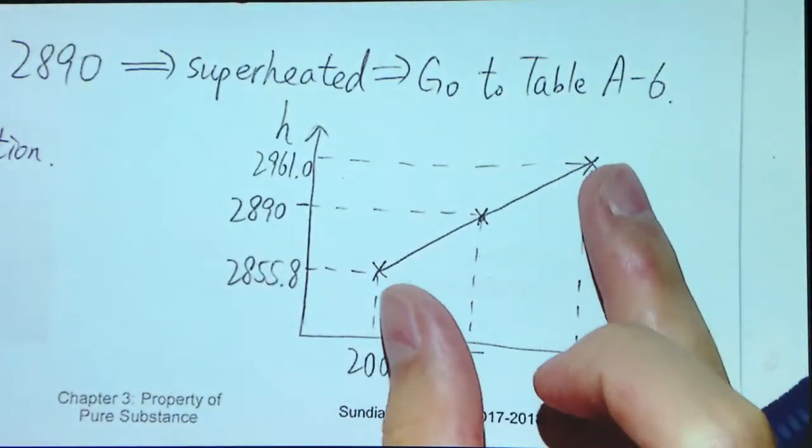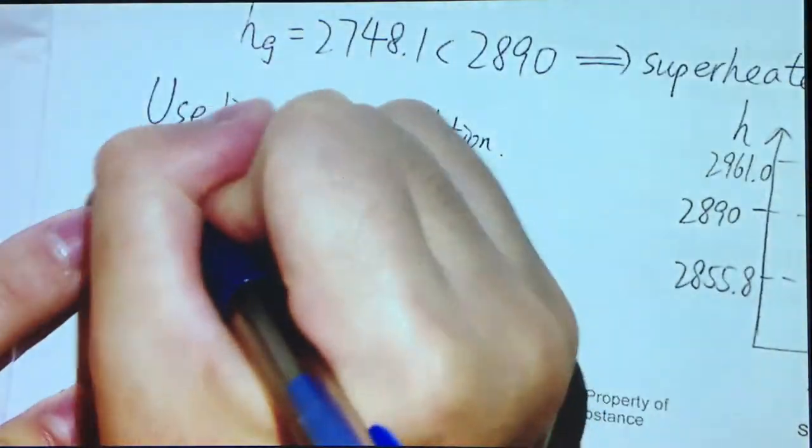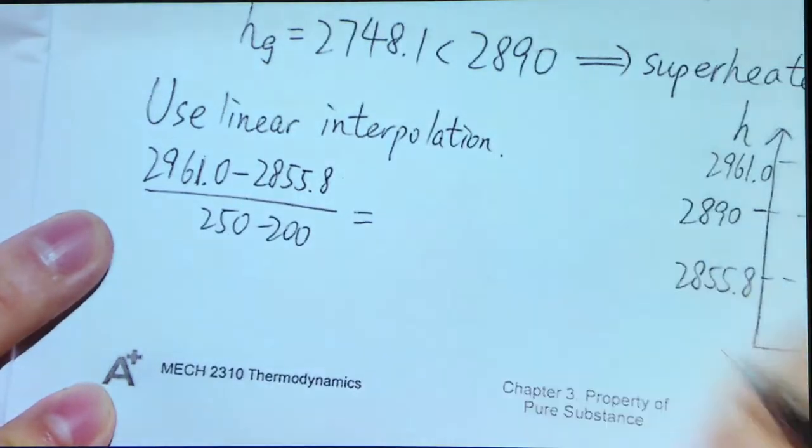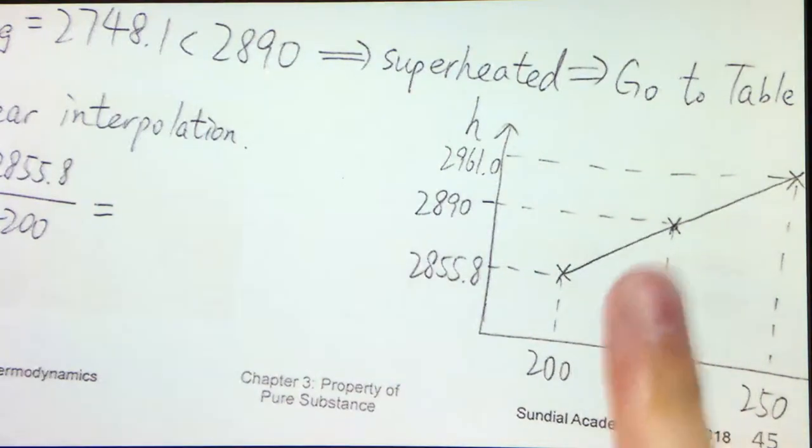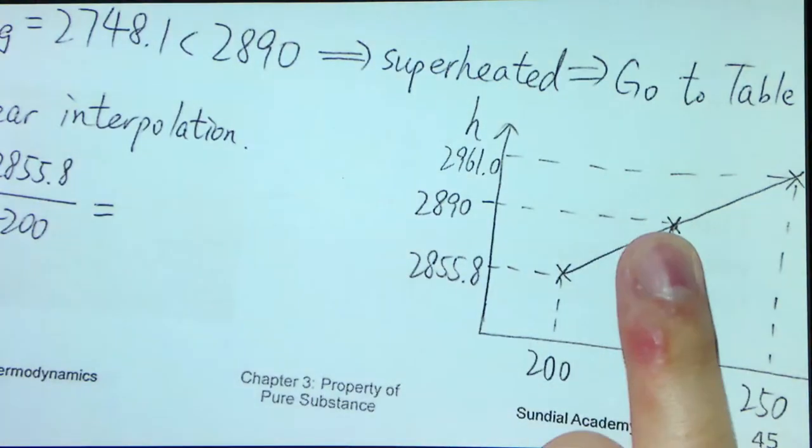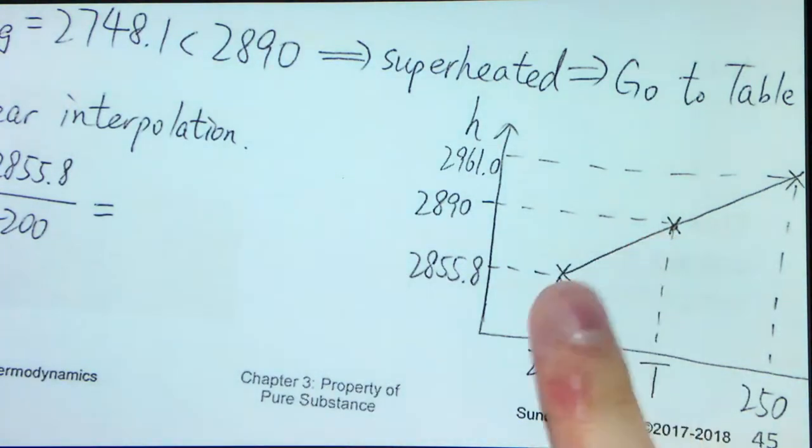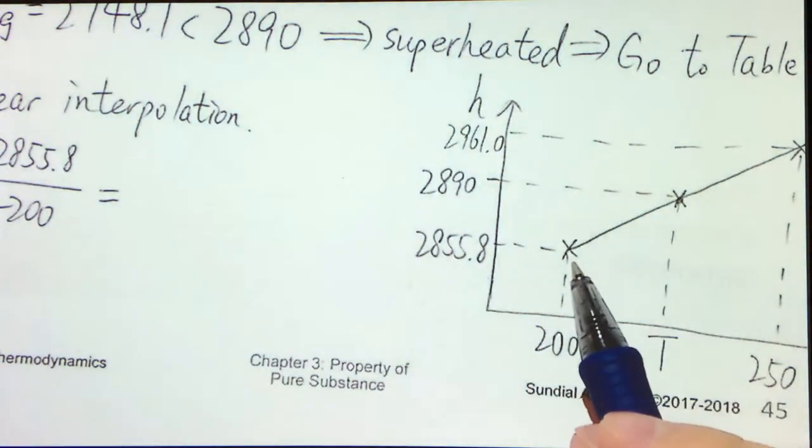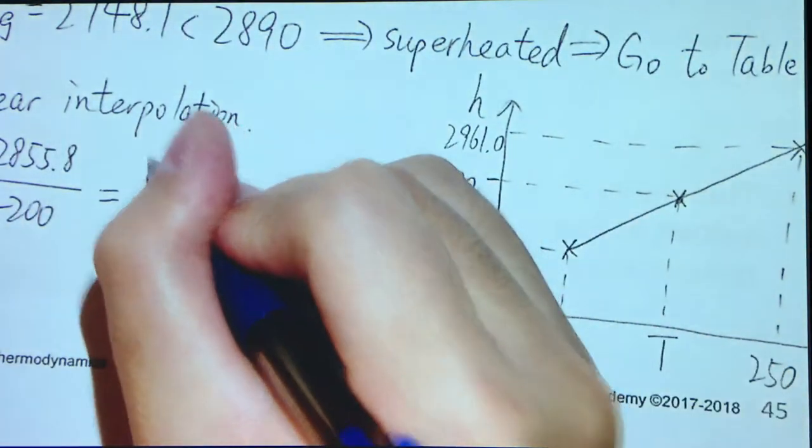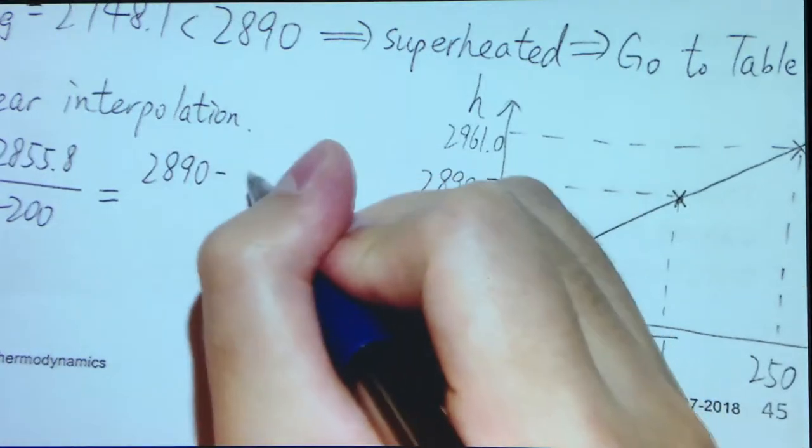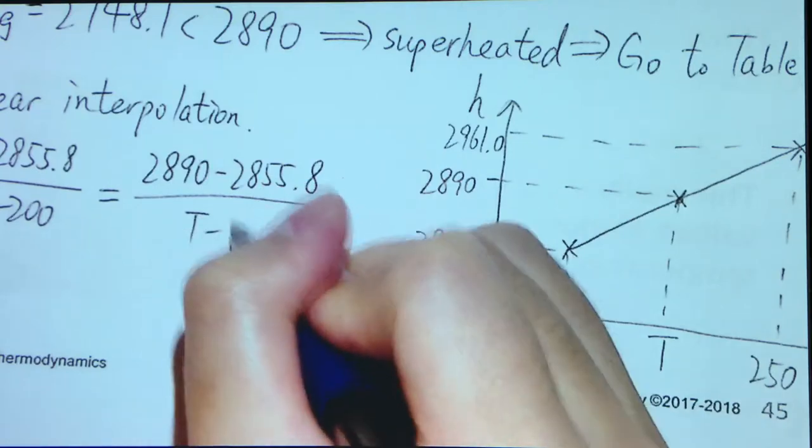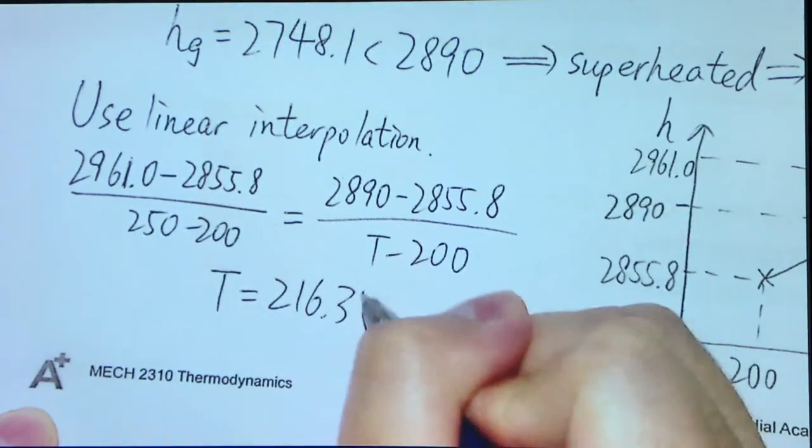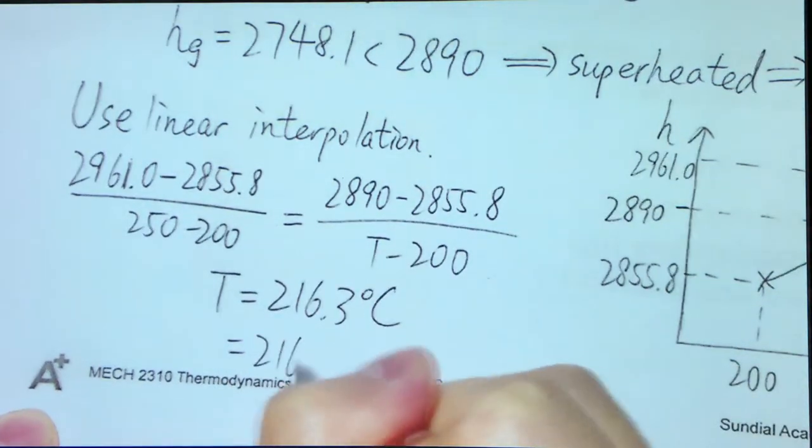Let me show the step. So we first find out the slope here. We have 2961.0 minus 2855.8 divided by 250 minus 200 equal to the slope of some points. Because our target is this one, so we need to use this point. We need to find the slope between these two points because we know that these three points are collinear. So for convenience, we just pick this point as well as this point. So 2890 minus 2855.8 divided by T minus 200. And you will find that T equal to 216.3 degrees C or to three significant figures, 216.